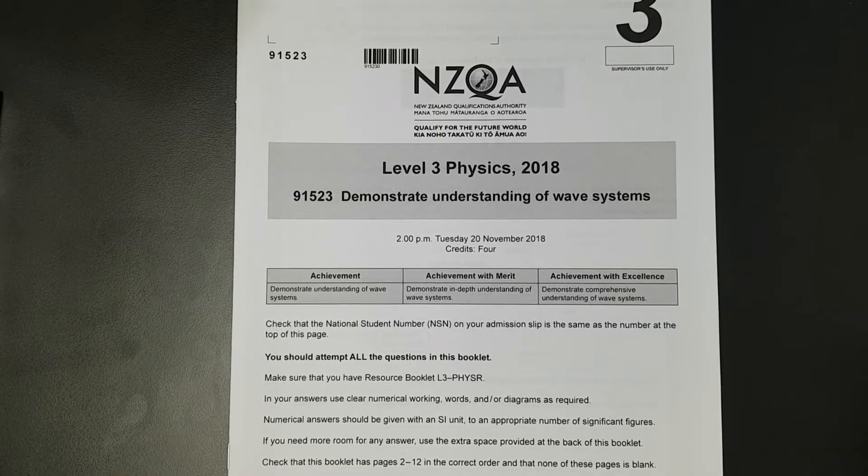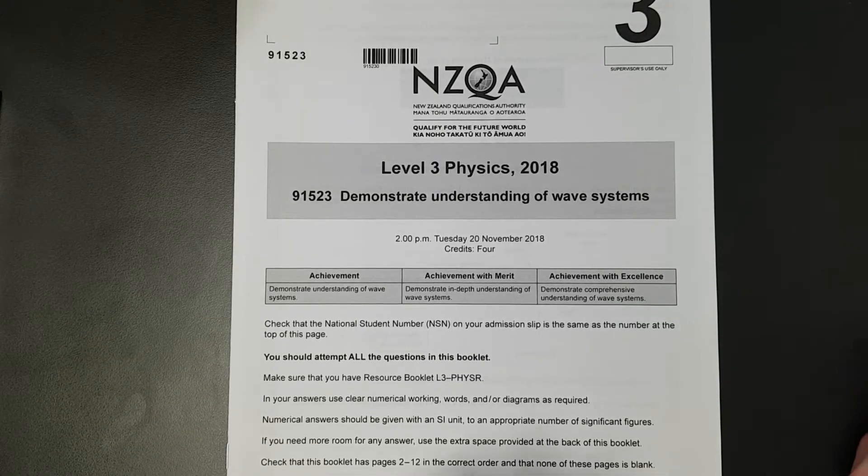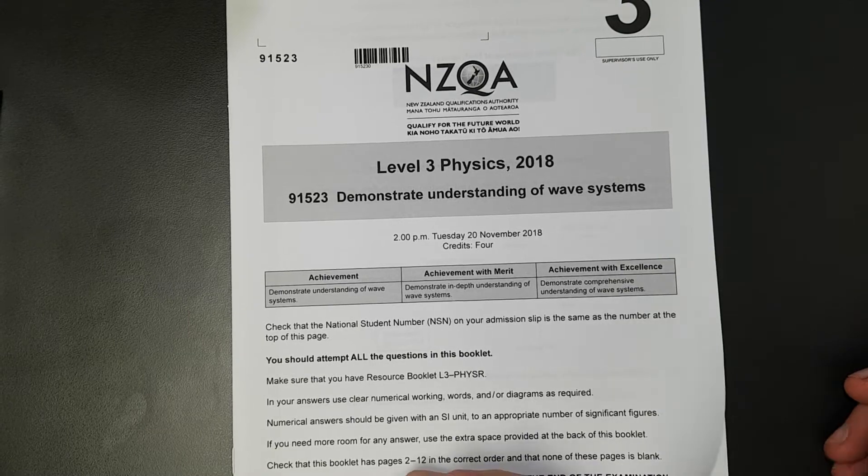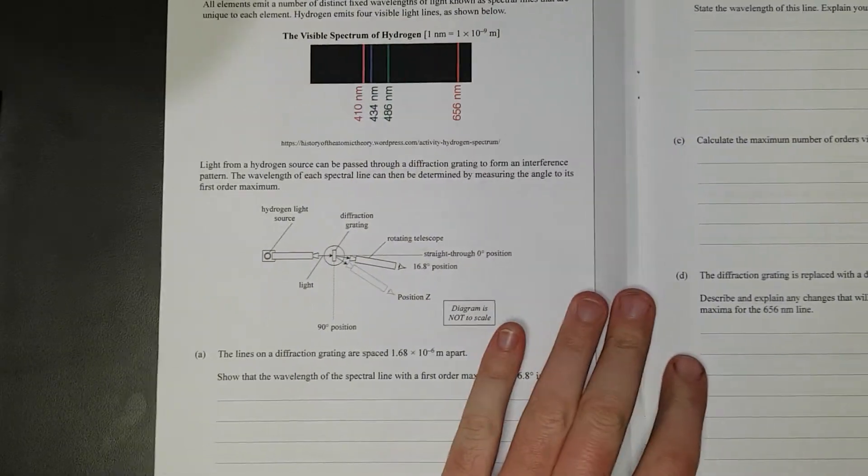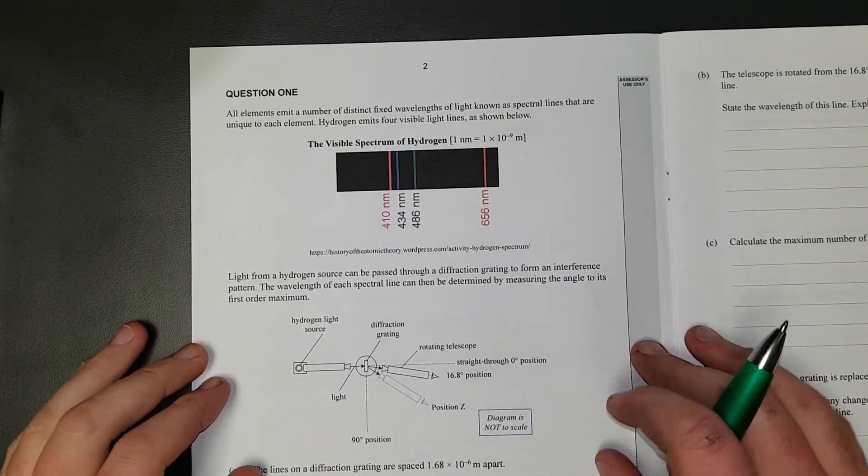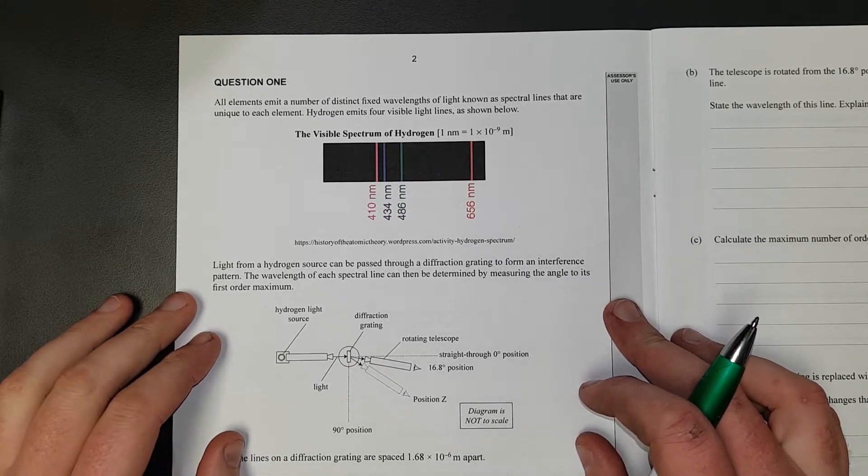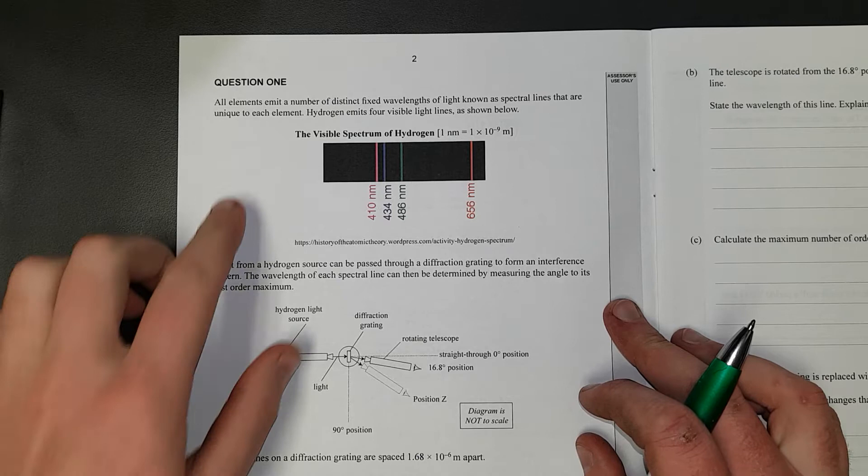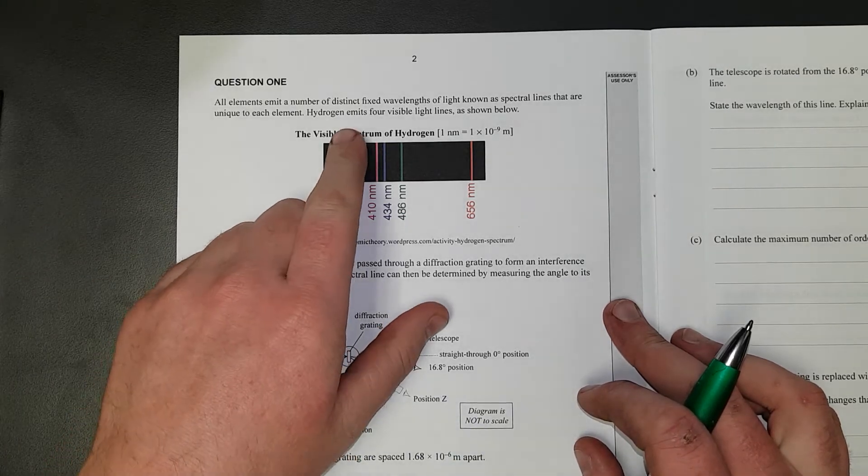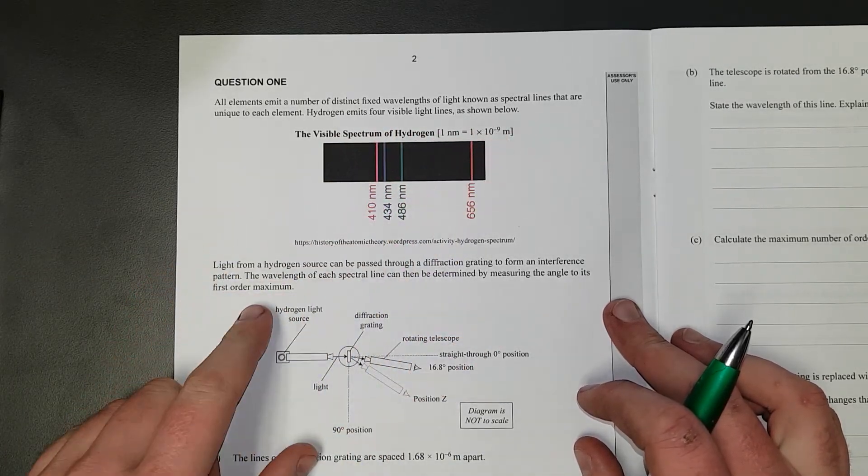For this video, I'll be working through the Level 3 2018 Waves paper. Question 1. All elements emit a number of distinct fixed wavelengths known as spectral lines, unique to each element. Hydrogen emits four visible lines as shown below.